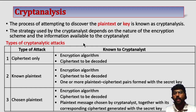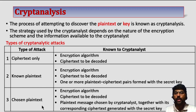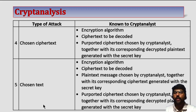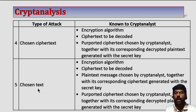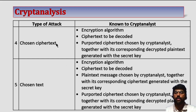There are 5 types of attacks done by cryptanalytic attacks. These are: ciphertext only, known plaintext, chosen plaintext, chosen ciphertext, and chosen text. The last two are less used by cryptanalysts or hackers, but still they have their own advantages. These two attacks are very less used by the attackers.